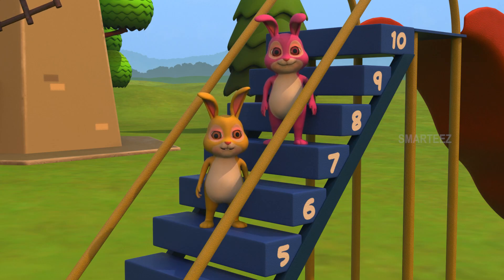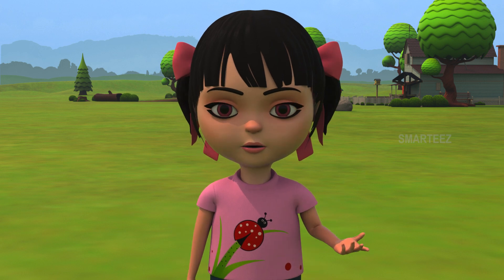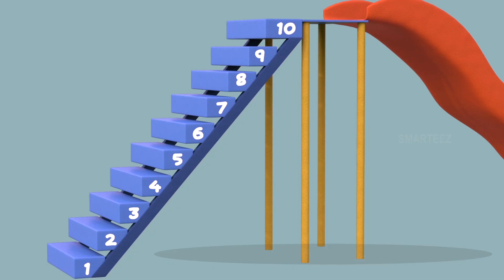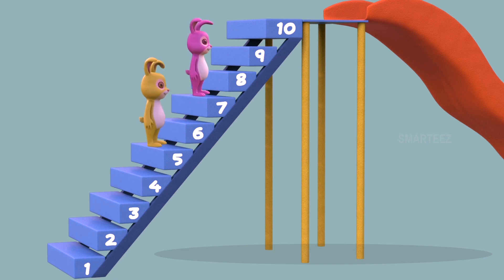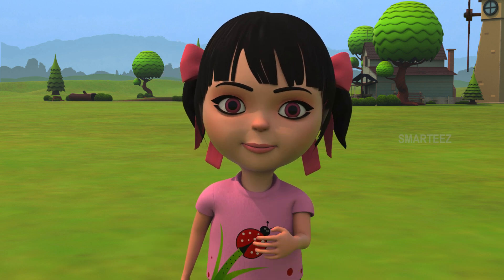Yay! I'm on five. I'm the winner. Just calm down, yellow bunny. The number you are on is less than the other one. Let me explain. When the music stopped, the yellow bunny was on step number five and the pink bunny was on step number seven. We see step number five is lower than step number seven. We call this as five is less than seven. So, when a number is lower to some other number, we call it as less than the other number. Okay bunnies, this round goes to the yellow bunny. Let me play the music again.